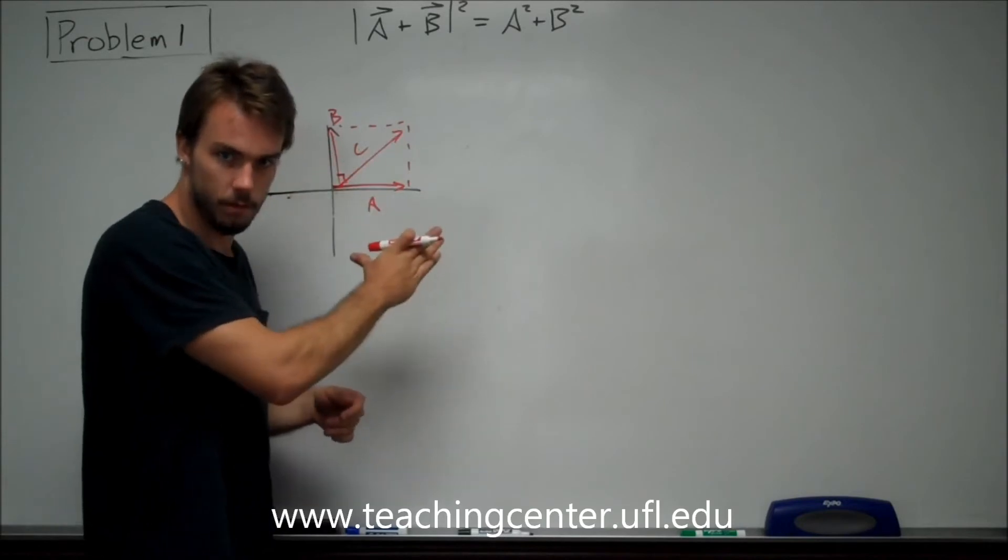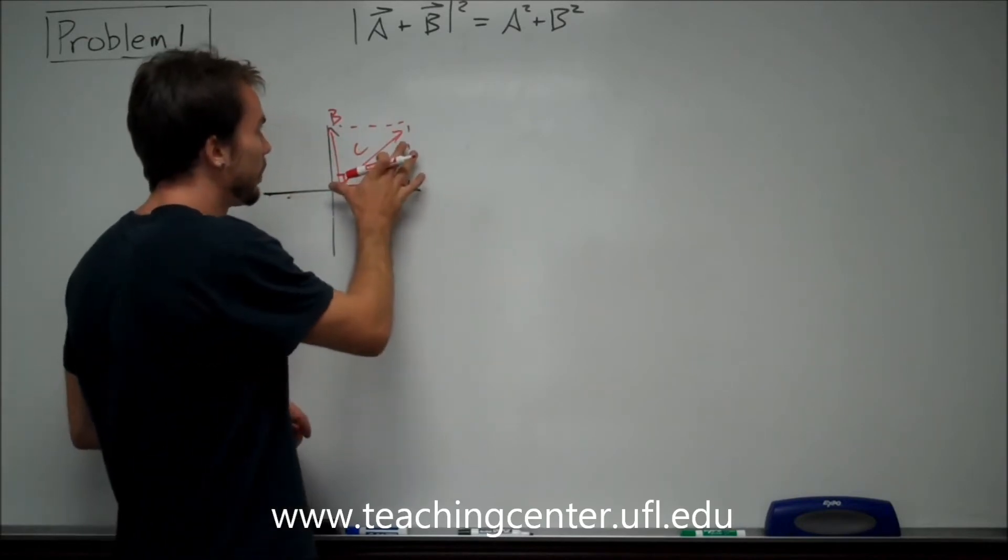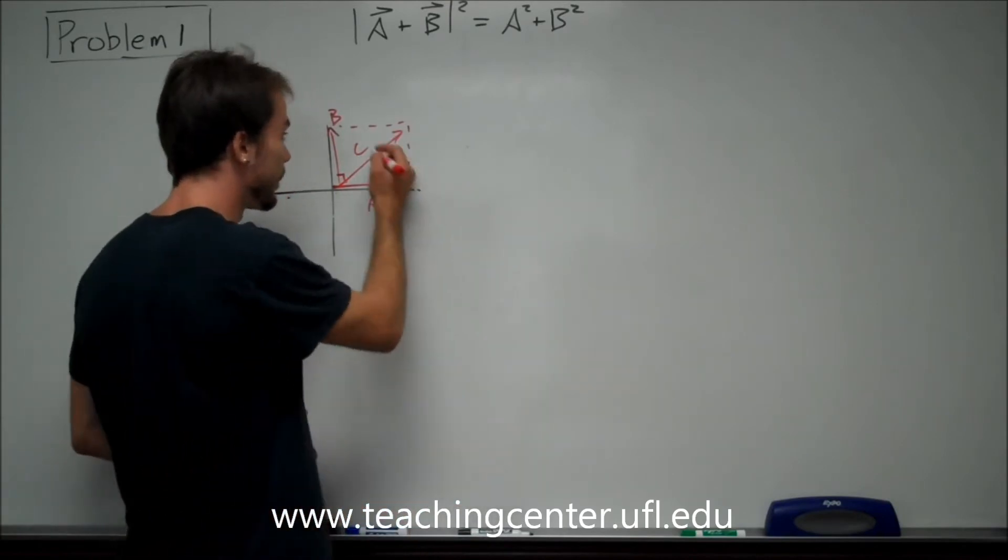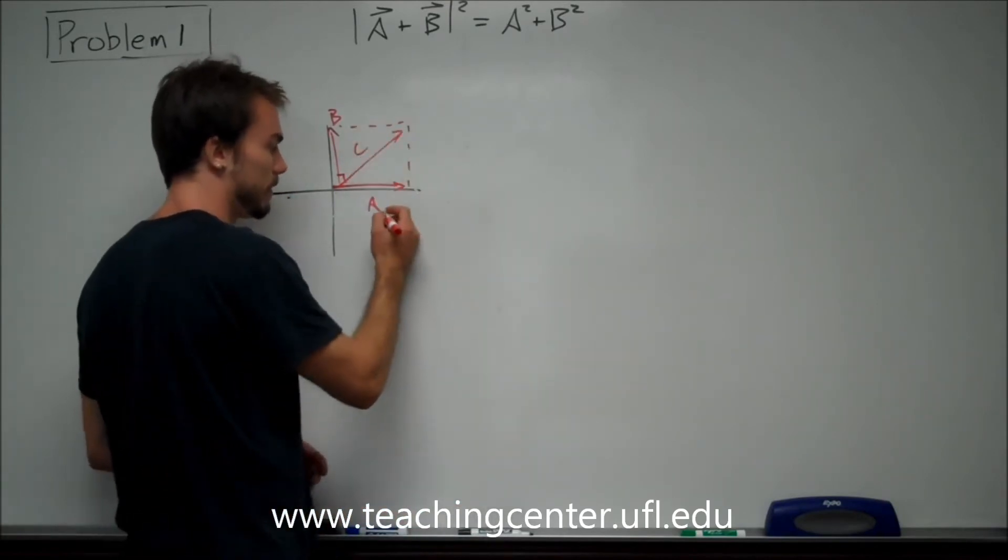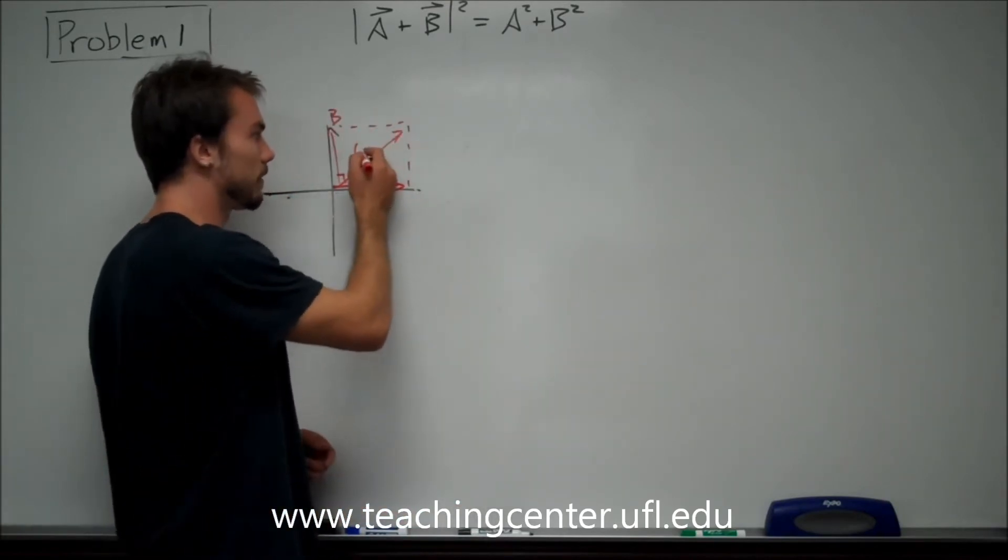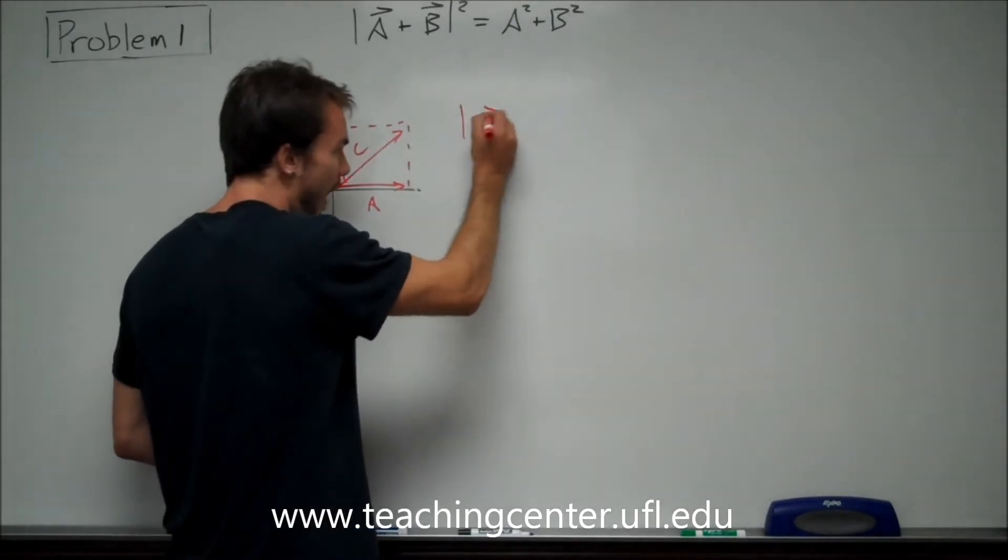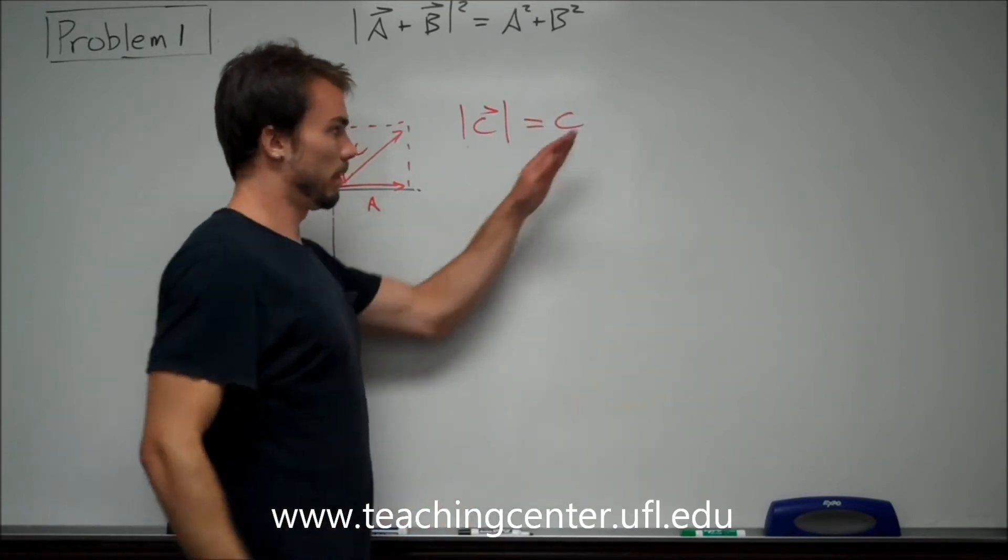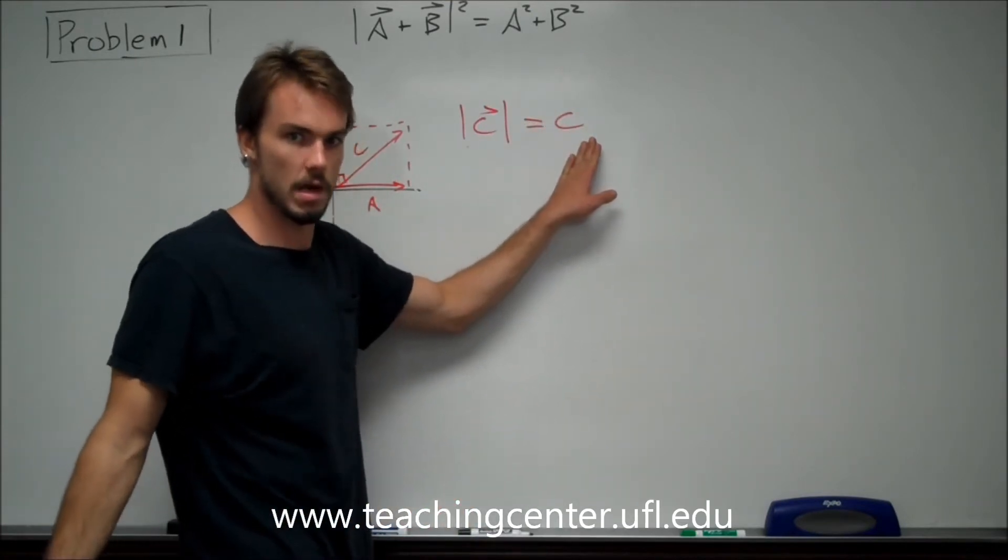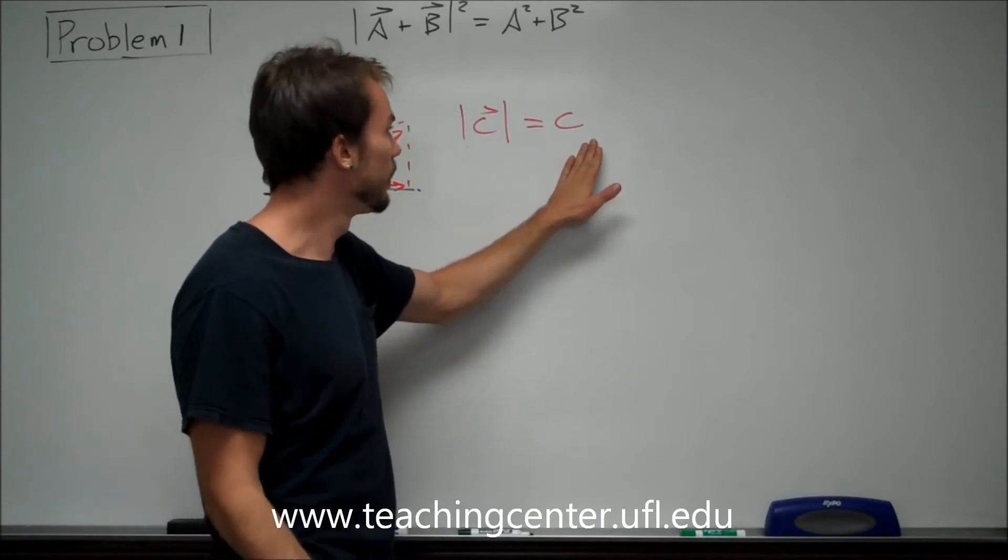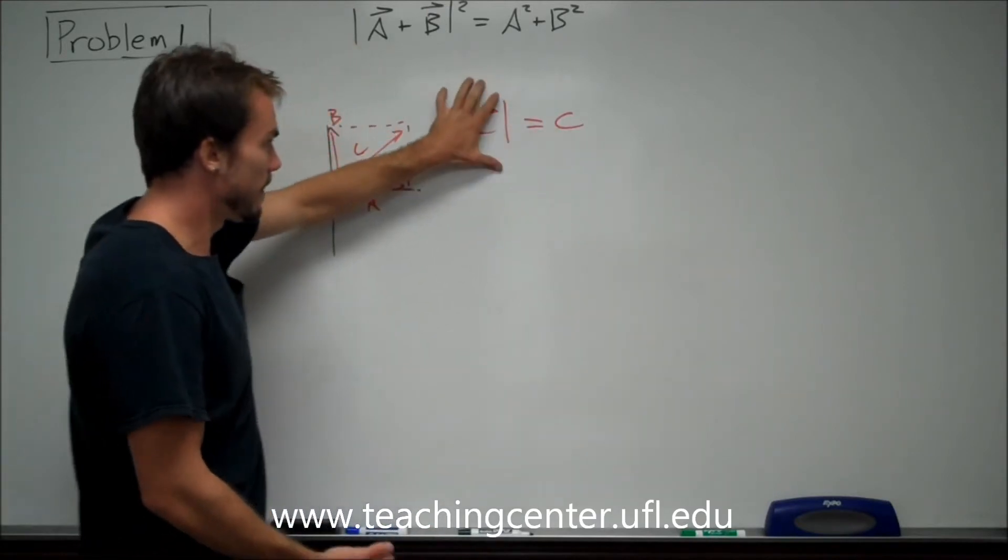Then you take the magnitude of C and then you have the number C. Instead of having these vectors—this is vector A, this is vector B, this is vector C. If you took C and you took the magnitude of it, you would just get C. That would just be a number instead of a number with a direction. There's just a magnitude to it.